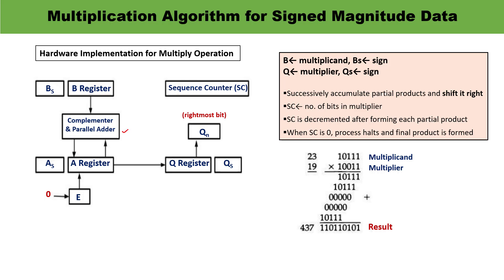A parallel adder is used here. Second, instead of shifting the multiplication to the left, here the partial product is shifted to the right. In our conventional technique, during multiplication it is shifted towards the left, but here the successive partial product is shifted towards the right when digital computers handle it. Third, when the corresponding bit of the multiplier is zero, there is no need to add all zeros — only the partial product is shifted, and it will not alter its value.